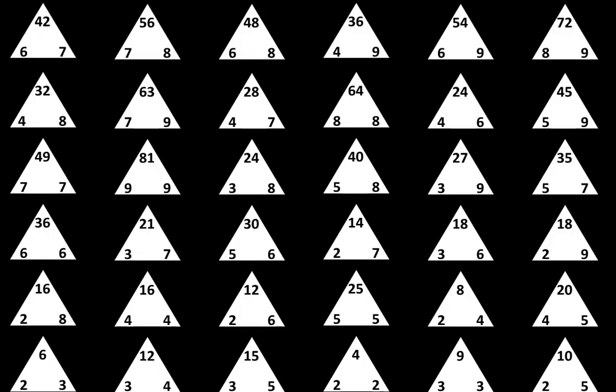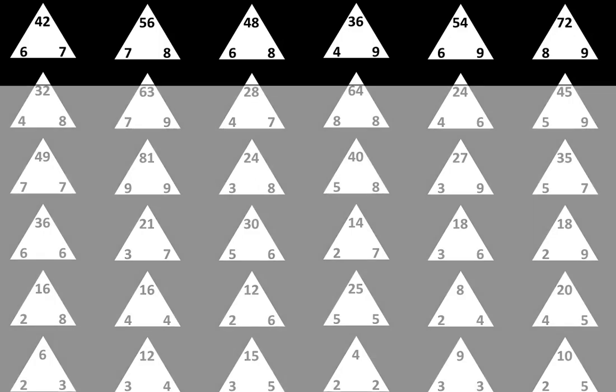Now you've created the fourth set of triangles. You can explore these facts by covering them with 3 pieces of paper: one piece to cover the rows you are not focusing on yet, another piece to cover the products, and a third piece to cover the factors. Then slide the paper to reveal the factors, think about what the product might be and say it out loud. Then slide this paper to reveal the product and think about how the factors are connected to the product. Repeat the process.